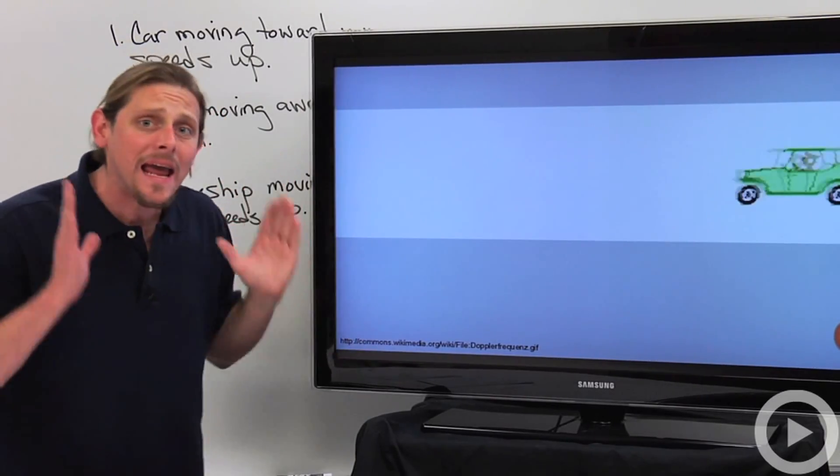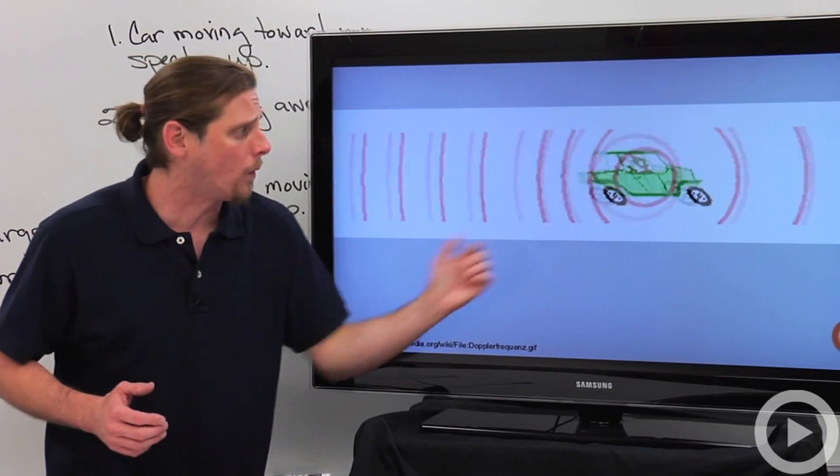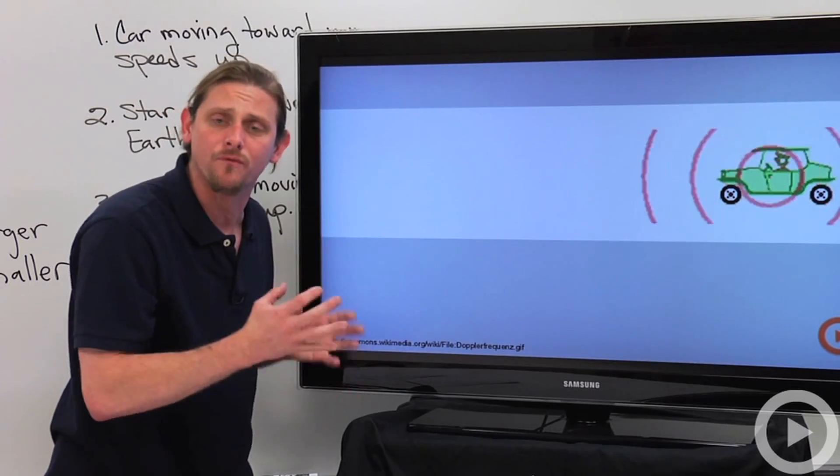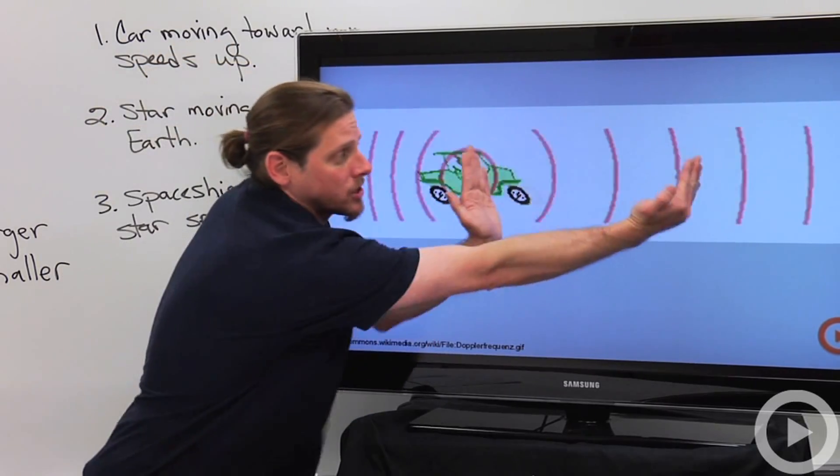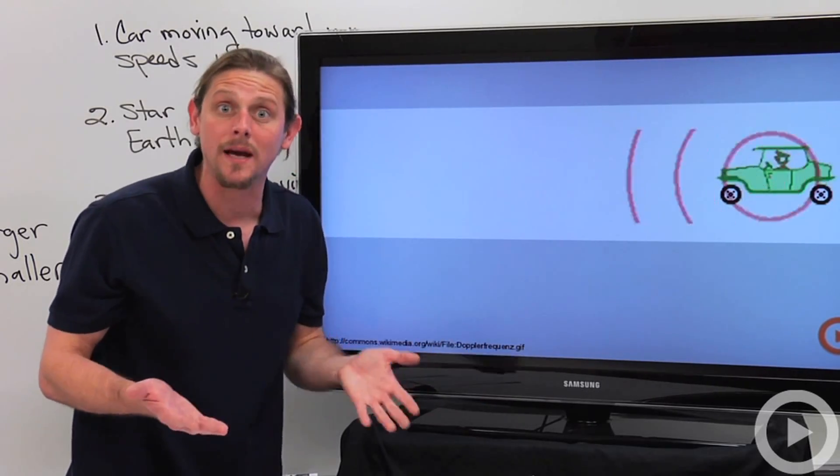It's a standard, easy, very simple thing to understand when you look at how it works. It's moving. It squishes the wave. Wavelength is shorter. That means the frequency is bigger. It's moving away. It stretches out the wave. That means the wavelength is longer, the frequency is smaller.